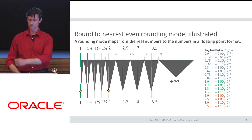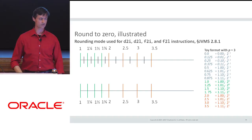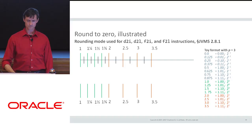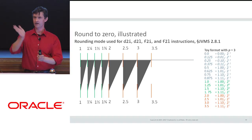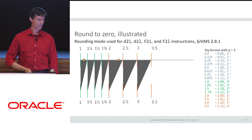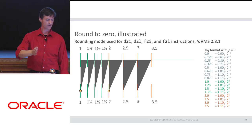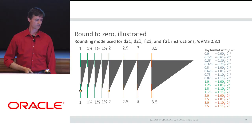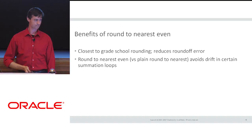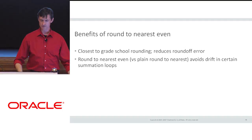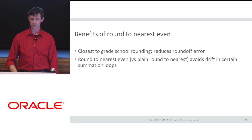Round-to-nearest-even is the default rounding mode. Another rounding mode is round-toward-zero or truncation, which produces asymmetrical triangles instead of symmetrical ones — rounding down in both cases so you don't overflow under truncation. The benefits of using round-to-nearest-even by default: it's closest to grade-school rounding, it reduces round-off error in a statistical sense, and it avoids drift in certain kinds of summation loops.